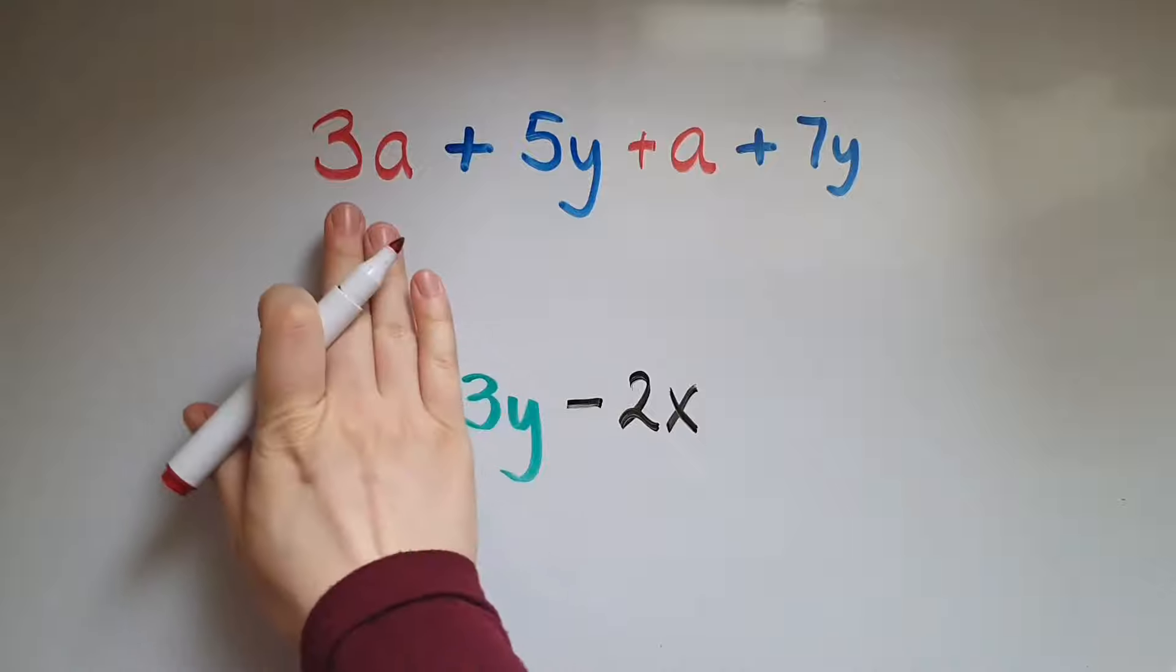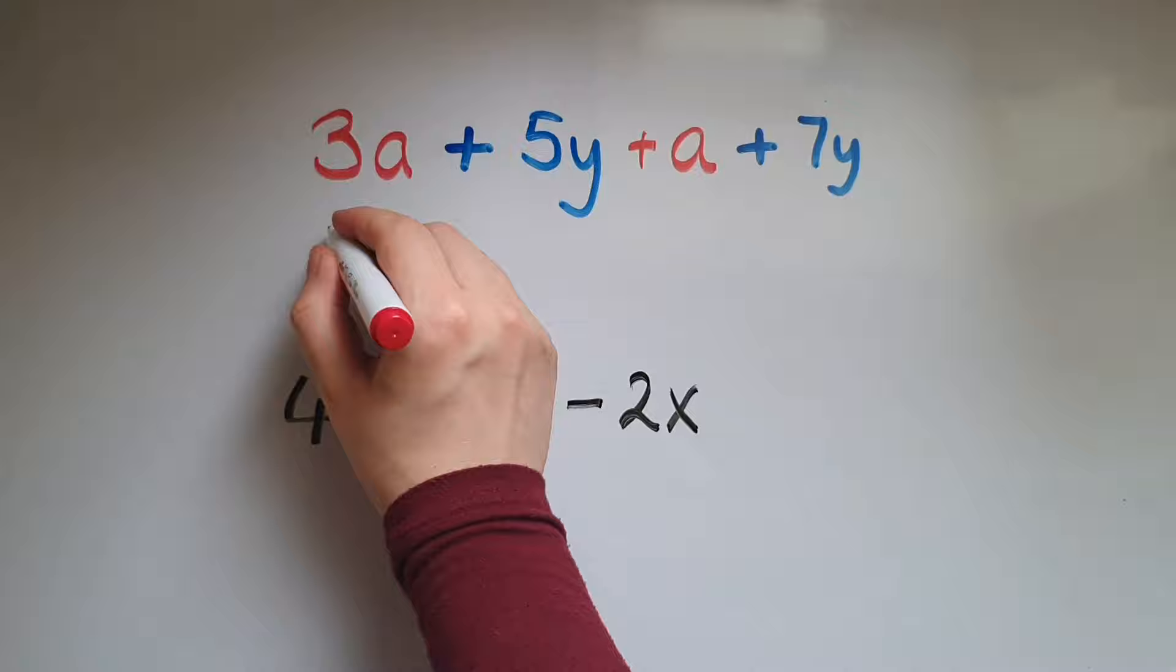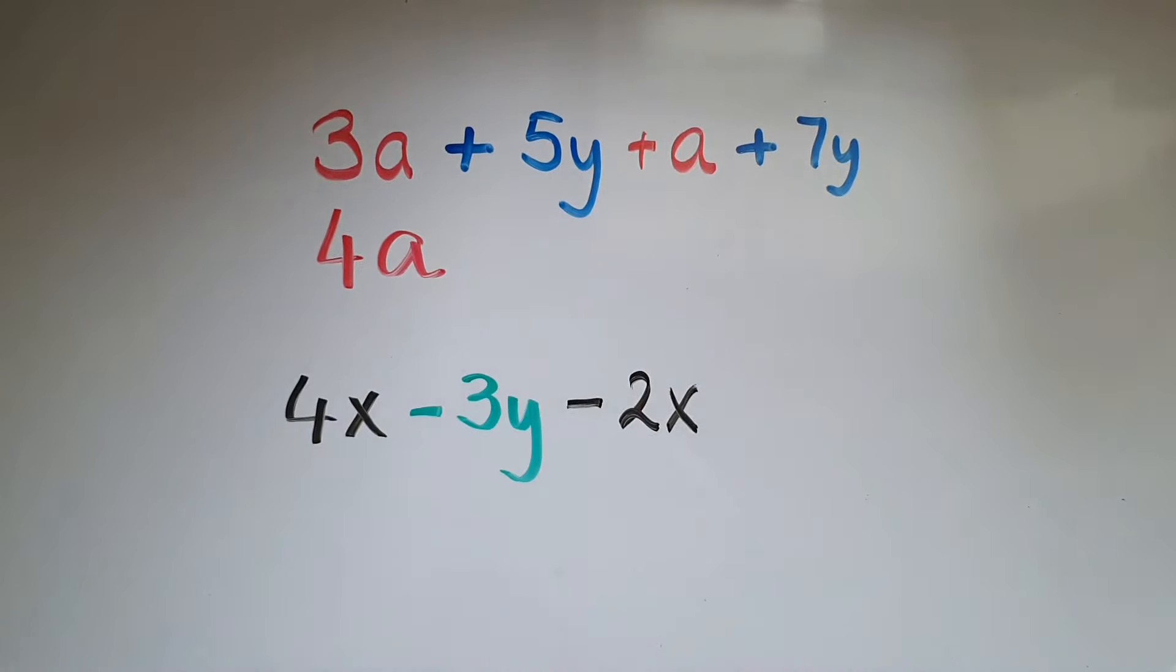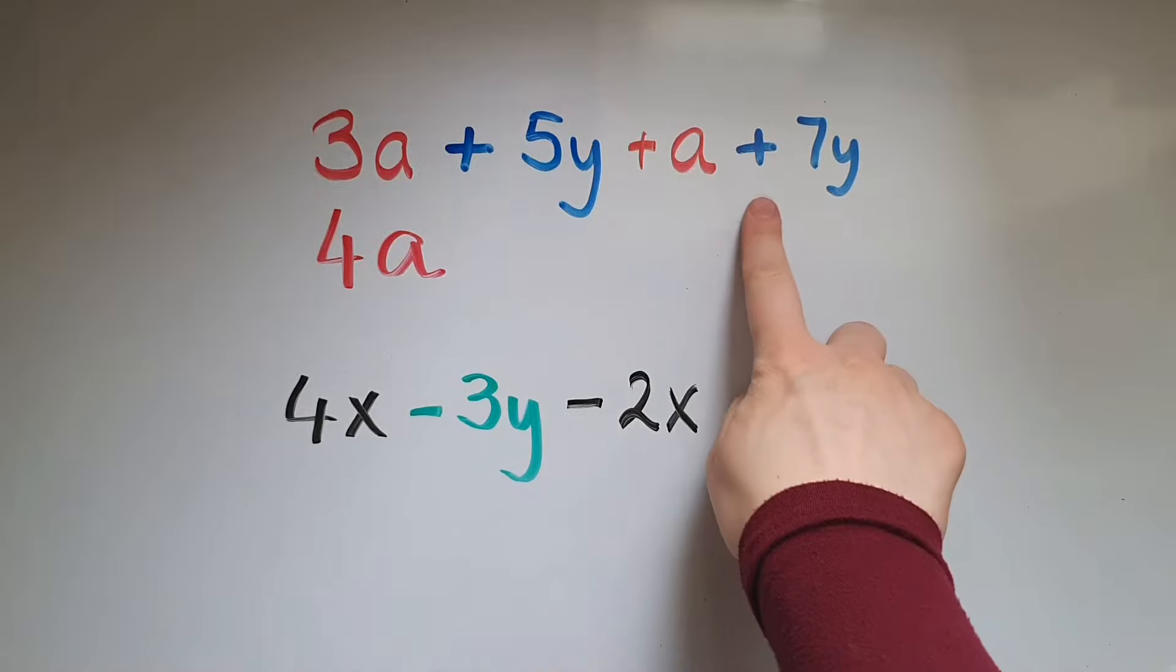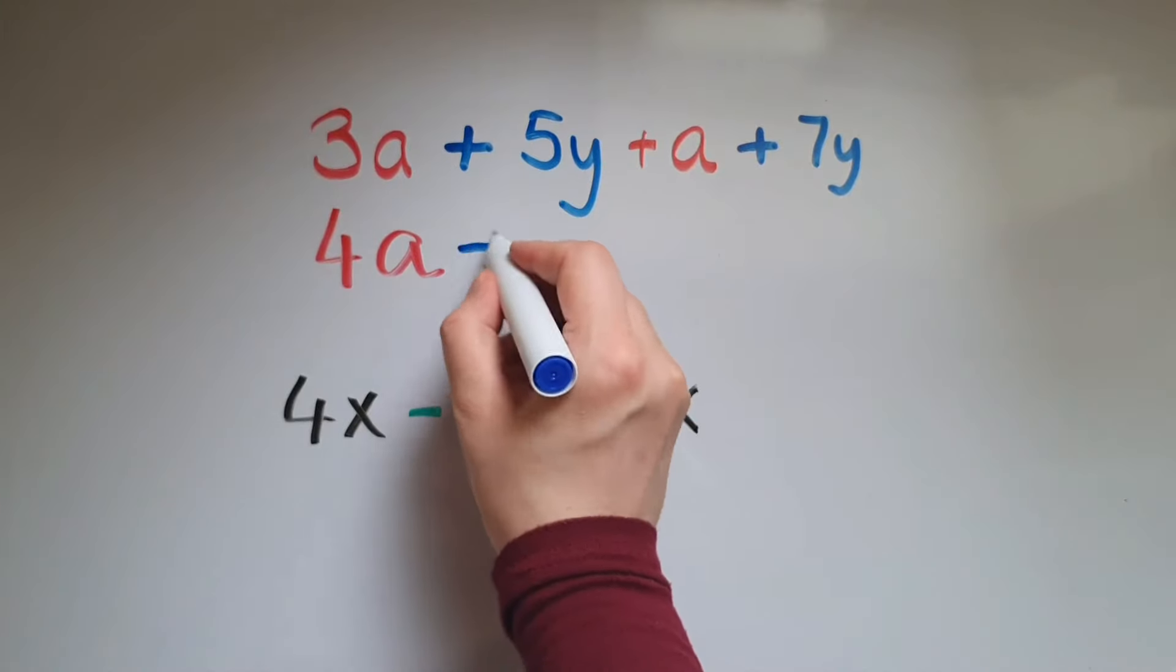So I've got three a and a, so that makes four a. And I've got plus five y plus seven y, so I'm adding 12 y.